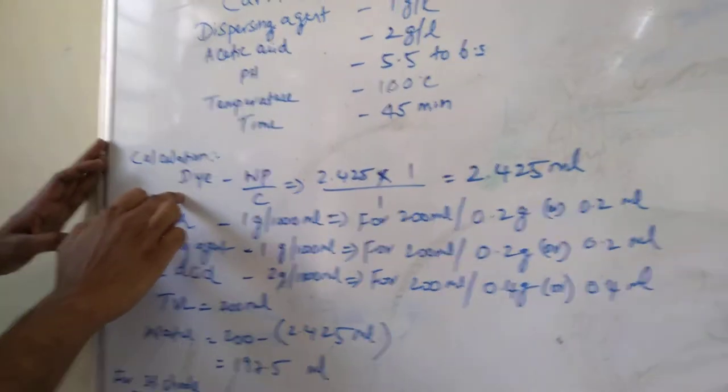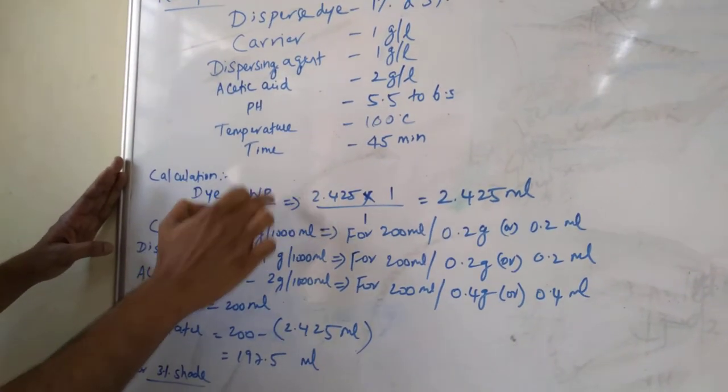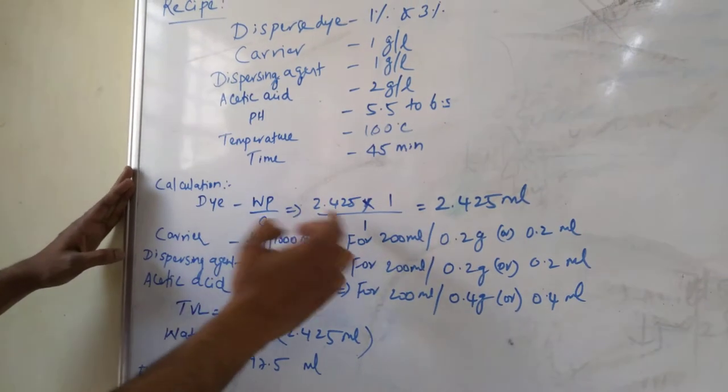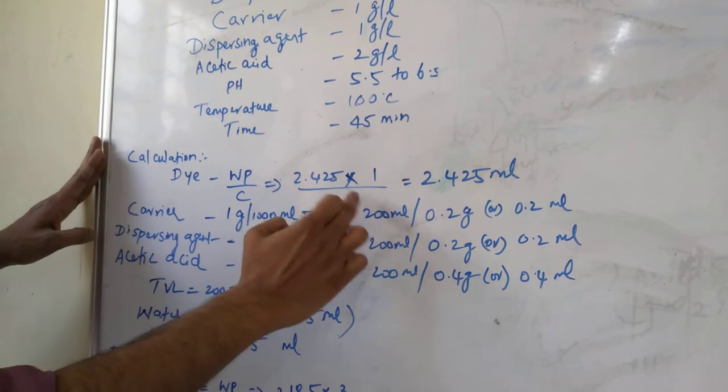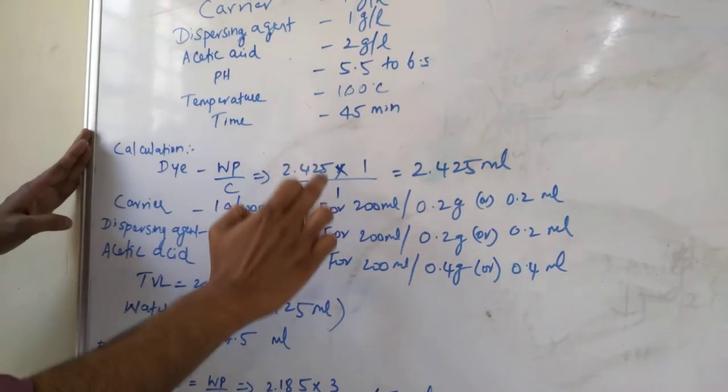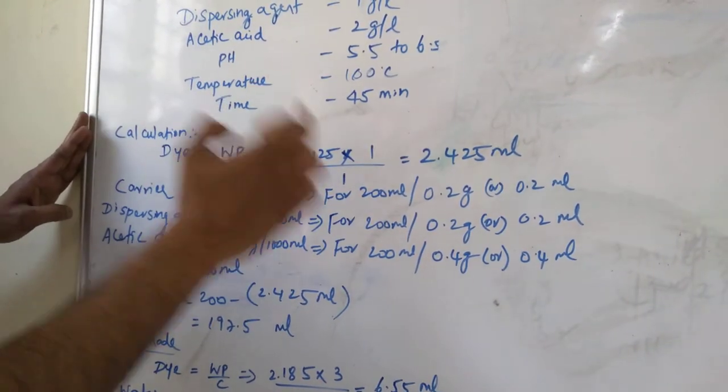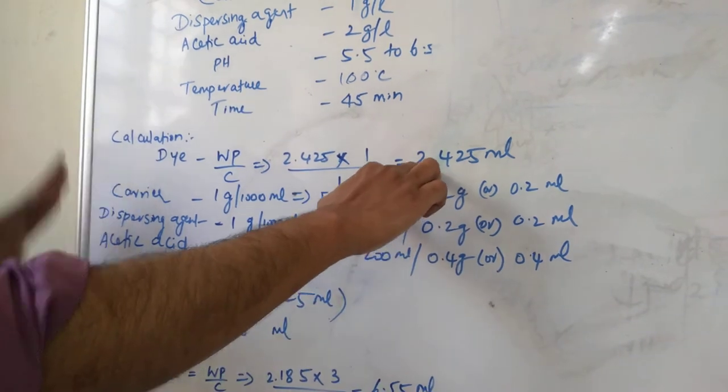For 1 percent shade, as usual, the formula is WP by C: weight of the fabric multiplied by percentage required divided by the stock solution percentage. I have prepared 1 percent stock. Same dye I am using, that is the dispersed red dye. I am getting 2.425 ml.